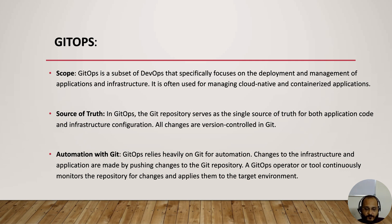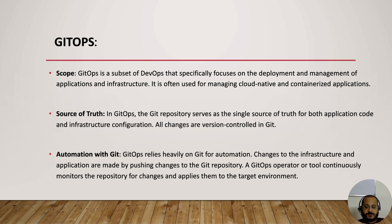In GitOps the scope is more limited. For example, we use a tool like GitLab — whatever you implement, everything should be checked into Git and written in an infrastructure-as-code format. This approach is especially useful when using containerization tools like Kubernetes and other container orchestration platforms.